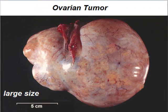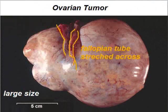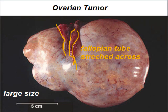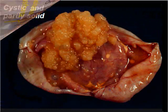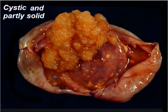This is the ovarian tumor excised. On gross inspection, you can see a cystic and partly solid ovarian tumor. The fallopian tube is stretched across. It is large in size, and when cut open, it shows cystic and partly solid areas, filled with straw-colored thin fluid.